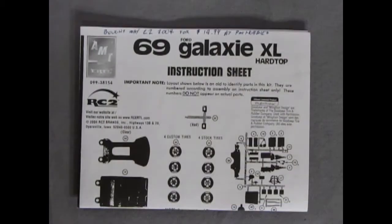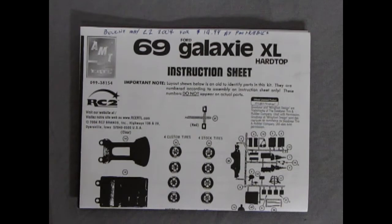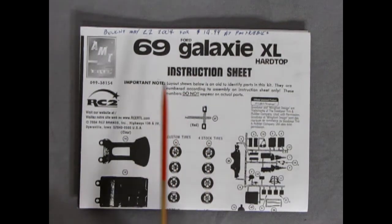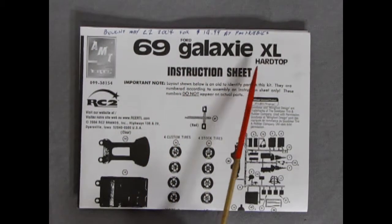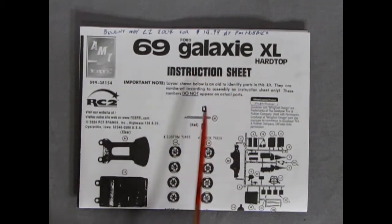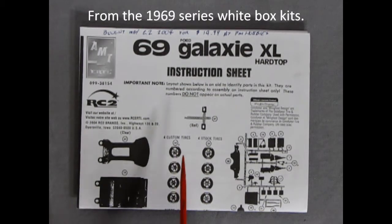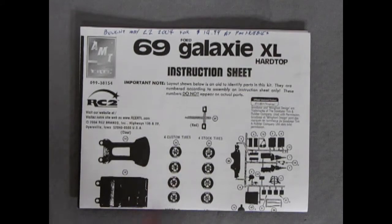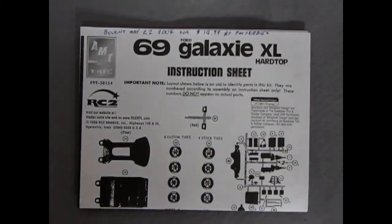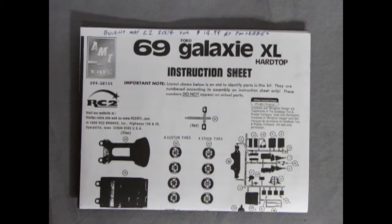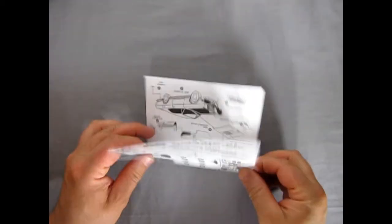Here we have our instruction sheet for a 69 Galaxy XL hardtop. This is the 1969 reprint of these instructions. And I was right. There was a 69 Buick in here, a Buick Riviera. Now I do have that kit on my shelf, but it's like two inches away from being complete. So I'm not doing a review on it. Unless somebody else has one somewhere they want to submit.